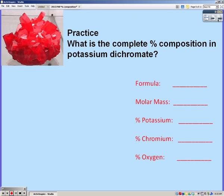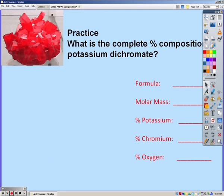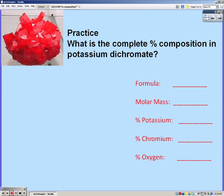All right, go ahead and write your formula for potassium dichromate. Your formula for potassium dichromate is K2Cr2O7. The molar mass you should have gotten was 294.20.